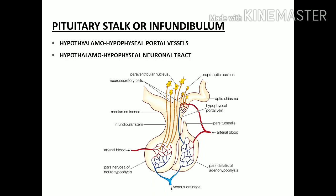There are two connections between the hypothalamus and the pituitary gland: the hypothalamo-hypophysial portal vessels and the hypothalamo-hypophysial neuronal tract. The portal vessels connect the hypothalamus with the anterior pituitary, through which stimulatory and inhibitory factors pass to reach the anterior pituitary tissue. The neuronal tract connects the hypothalamus with the posterior pituitary.